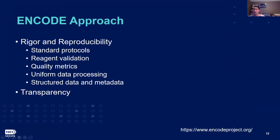Under rigor and reproducibility, there's a strong focus on the use of standardized protocols for assay experiments and data analyses, the use of validated reagents and the validation of reagents, as well as having quality metrics in place for the various data types to enhance rigor and enable reproducibility.